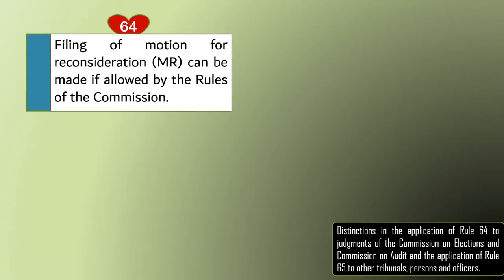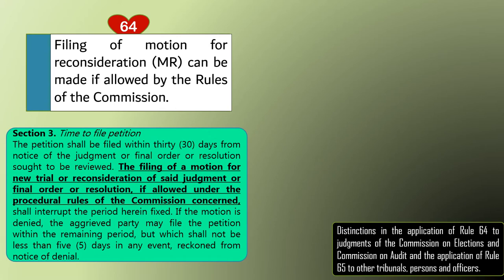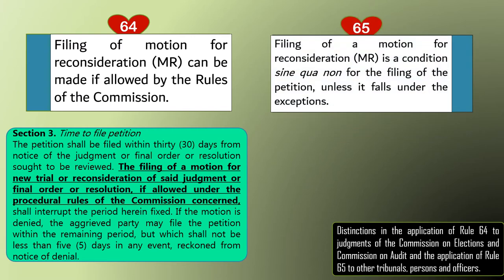Another difference is the Motion for Reconsideration. Can you file an MR under Rule 64? If it is allowed by the Rules of the Commission, then you can file a motion for reconsideration — very clear under Section 3 of Rule 64, which states: 'The filing of a motion for new trial or reconsideration of the judgment or final order or resolution if allowed under the procedural rules of the Commission concerned.' How about Rule 65? The MR is a requirement — a condition sine qua non before you can file your Petition for Certiorari, Prohibition, and Mandamus.